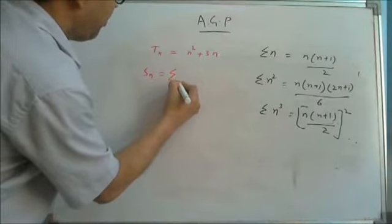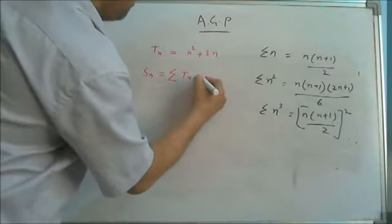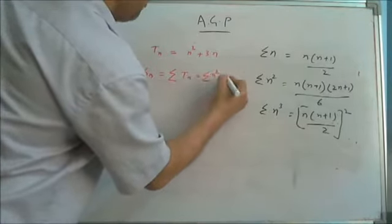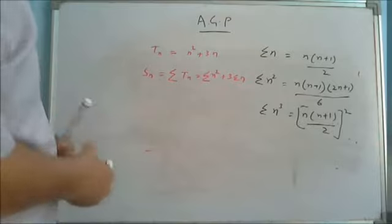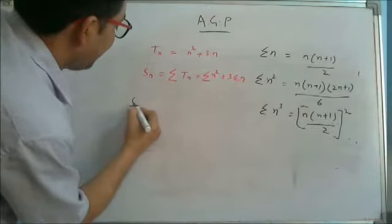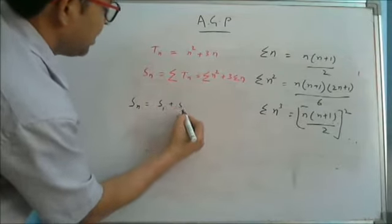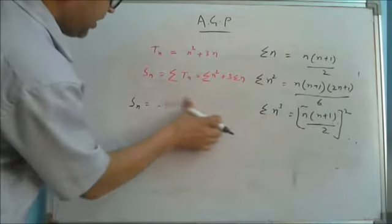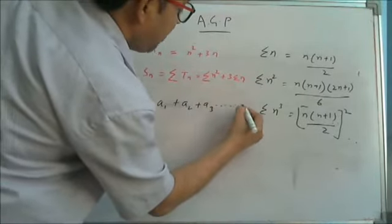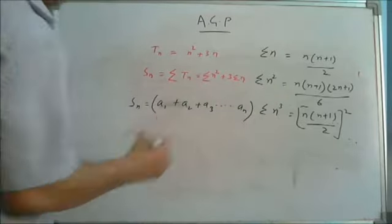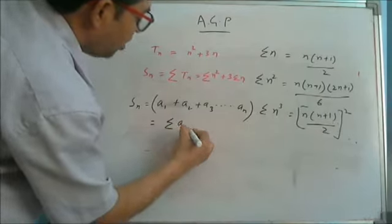Sₙ is actually the summation of Tₙ. Sₙ is the sum of all terms: a₁ + a₂ + a₃ + ... The sum of all terms is written as summation of aₙ or Tₙ. If we know the nth term, summation is going to be the sum of that series. So in that particular case, Sₙ = summation of Tₙ.